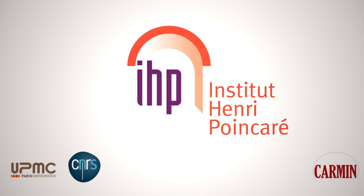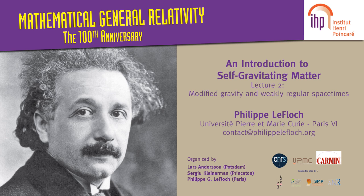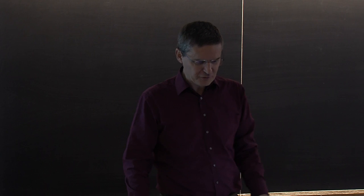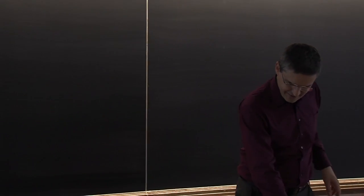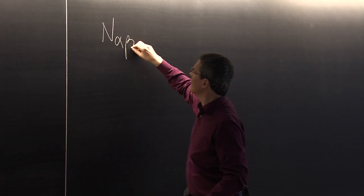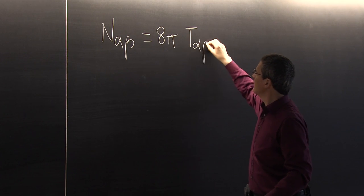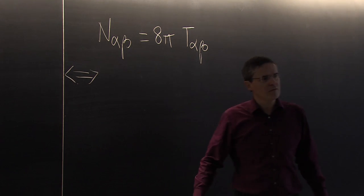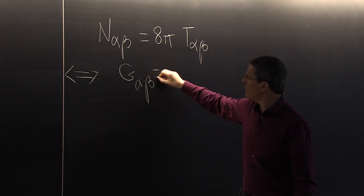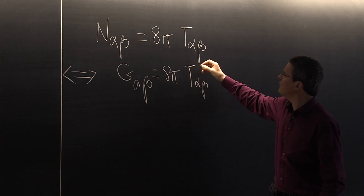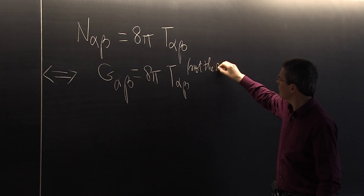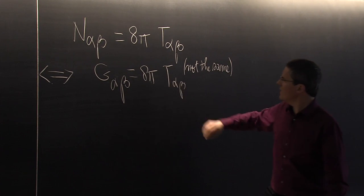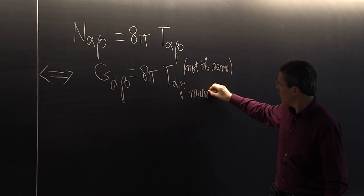How can you describe the theory of modified gravity? Last week we started discussing the theory of modified gravity, and I wrote the equation of modified gravity in this form. The theory of modified gravity is essentially equivalent to the Einstein equations with a massive field — specifically, a scalar field corresponding to a massive scalar field.